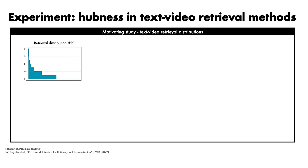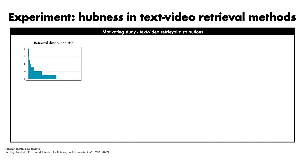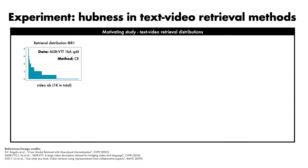The first set of experiments were conducted to understand whether hubness affects modern cross-modal retrieval methods. For this, we examined the retrieval distribution for recall at 1 on the MSRVTT dataset 1K split, using the collaborative experts retrieval method. On the x-axis, we plot video IDs — of which there are 1000 in total — ordered according to their retrieval frequency. On the y-axis, we plot the number of times each video was retrieved as the top-ranked result by the 1000 test queries. We see that approximately half of the 1000 videos are simply never retrieved as the top-ranked result for any query. At the other end of the spectrum, a few videos are retrieved 8 times as the top-ranked result, in a manner characteristic of hubs.